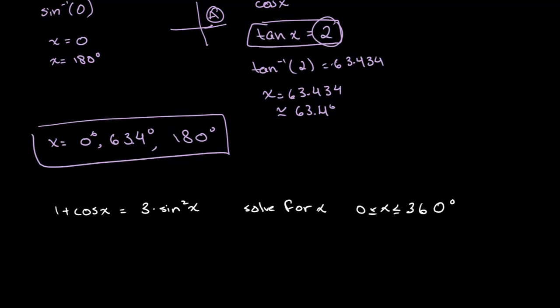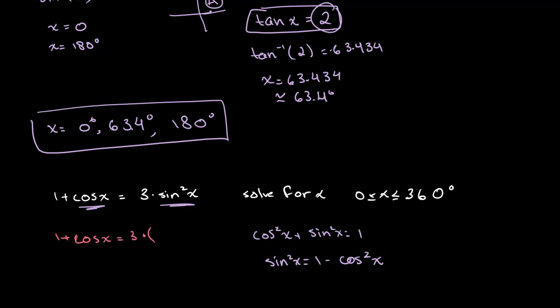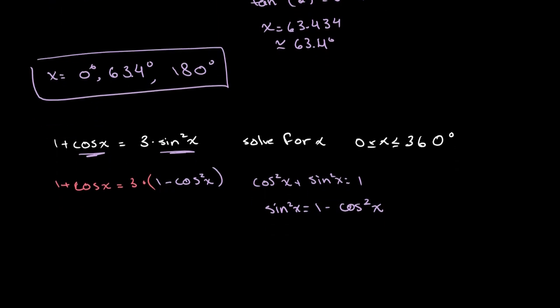We get everything in terms of cosine of x because we have sine squared and not cosine squared, making it easier to substitute. Using our identity, cosine squared of x plus sine squared of x equals 1, we get that sine squared of x equals 1 minus cosine squared of x. Substituting, 1 plus cosine of x equals 3 times (1 minus cosine squared of x), which gives us 3 minus 3 cosine squared x equals 1 plus cosine x.